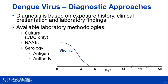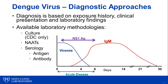At the time of mosquito transmission, viremia rapidly spikes and is detectable by molecular methods for the first four to six days following symptom onset during acute disease. During the viremic period and up to 10 days following symptom onset, the dengue virus NS1 antigen is released and also detectable. The IgM antibody response becomes detectable roughly four to five days following symptom onset and remains elevated for two to three months. Finally, IgG antibody levels become detectable five to seven days following symptom onset and will remain elevated for years to decades.